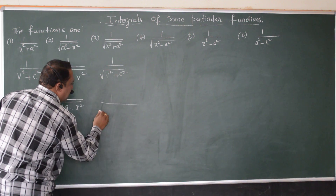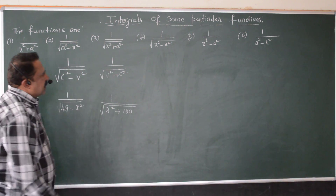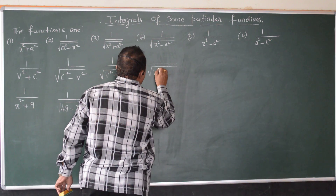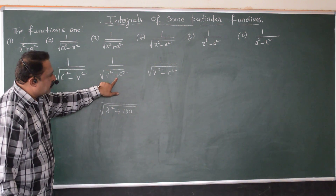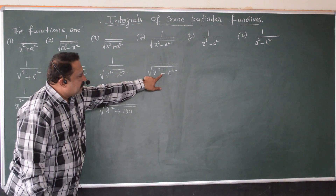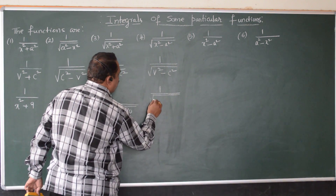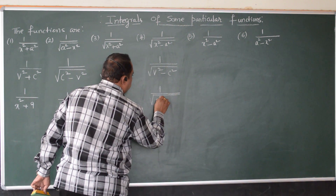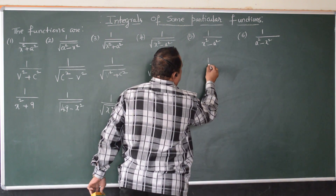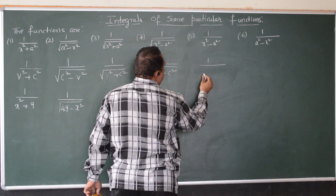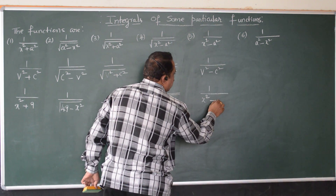An example for the third function can be 1 over square root of x² plus 100. The fourth function is 1 over square root of x² minus a², that is, variable square minus constant square. Both the third and fourth functions have square root signs, but the third has a positive sign and the fourth has a negative sign between variable square and constant square. An example is 1 over square root of x² minus 29, or integrating 1 over x² minus 50.